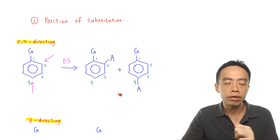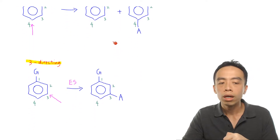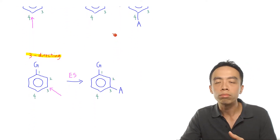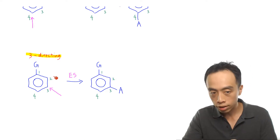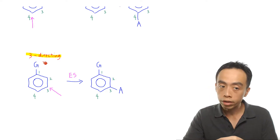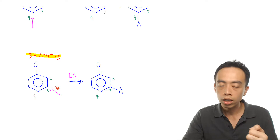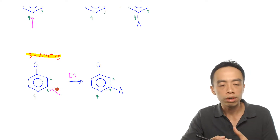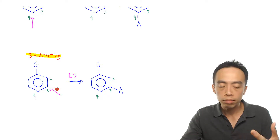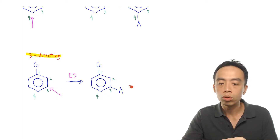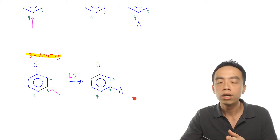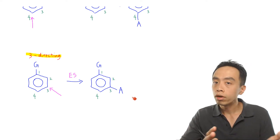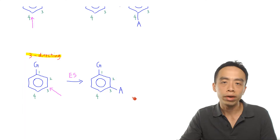So 2,4-directing is pretty straightforward. On electrophilic substitution — whether it is chlorination, bromination, nitration, or any electrophilic substitution reaction — the product will be attached to position 2 or position 4 with respect to the original group. Remember, it is the group already attached to benzene that decides where the next group goes. For 3-directing, the group directs the incoming group to position 3, skipping one seat. So we only have these two directing effects: either 2,4-directing or 3-directing.